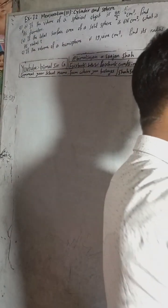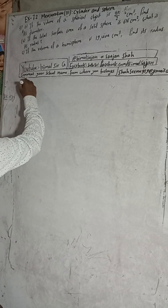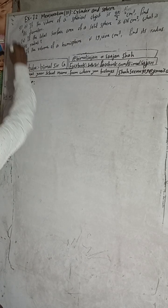So now I will start the solution. Dear students, don't forget to share with your friends, because sharing means increasing your knowledge. Now I will start this solution. If the volume of a spherical object is 9π/2 cm³,